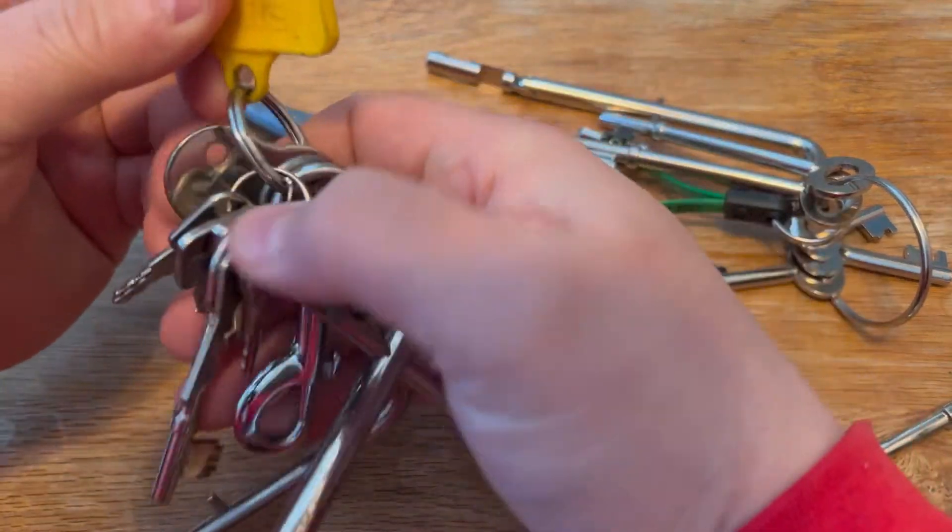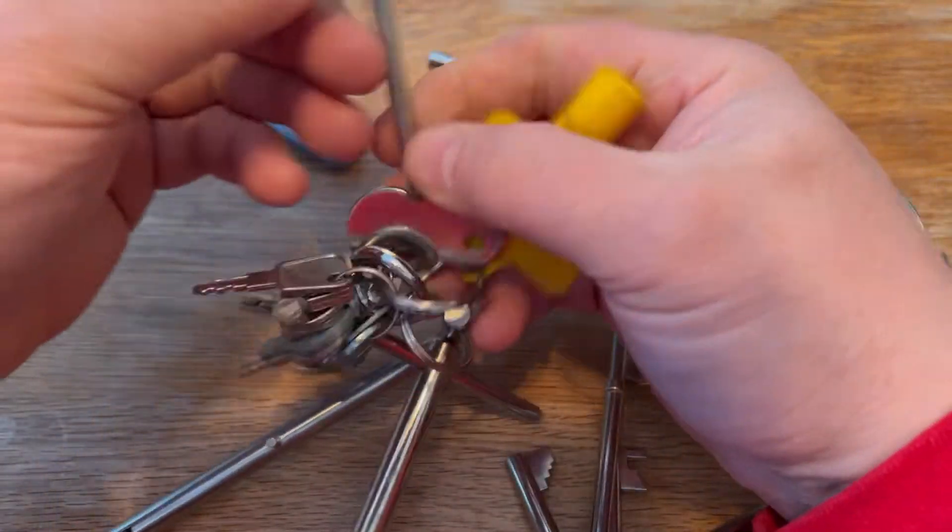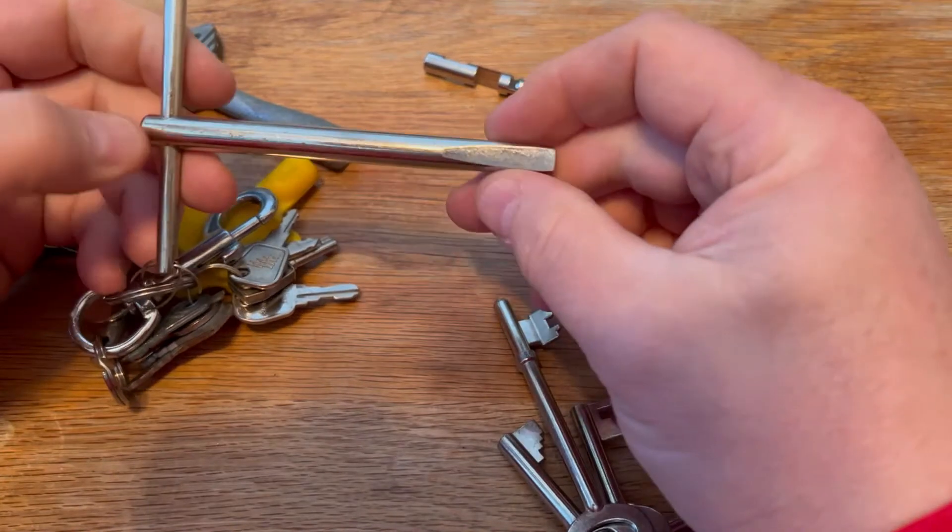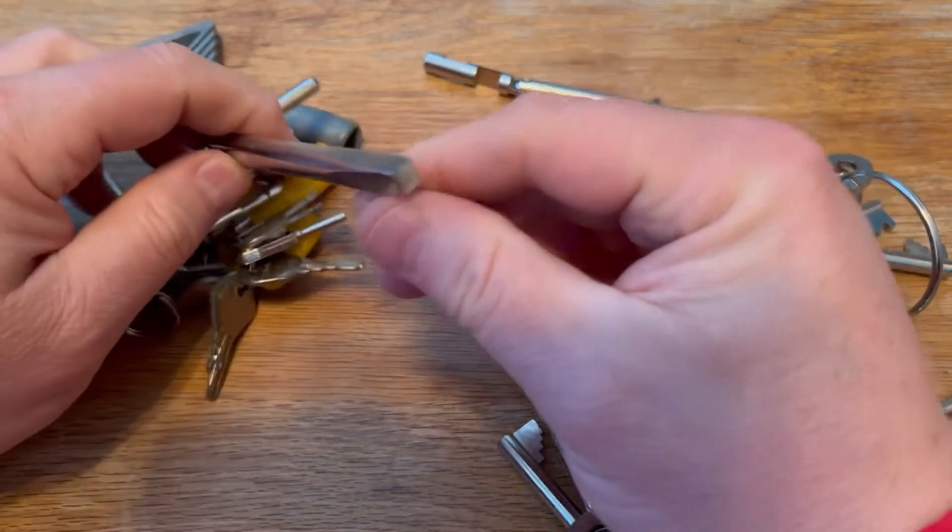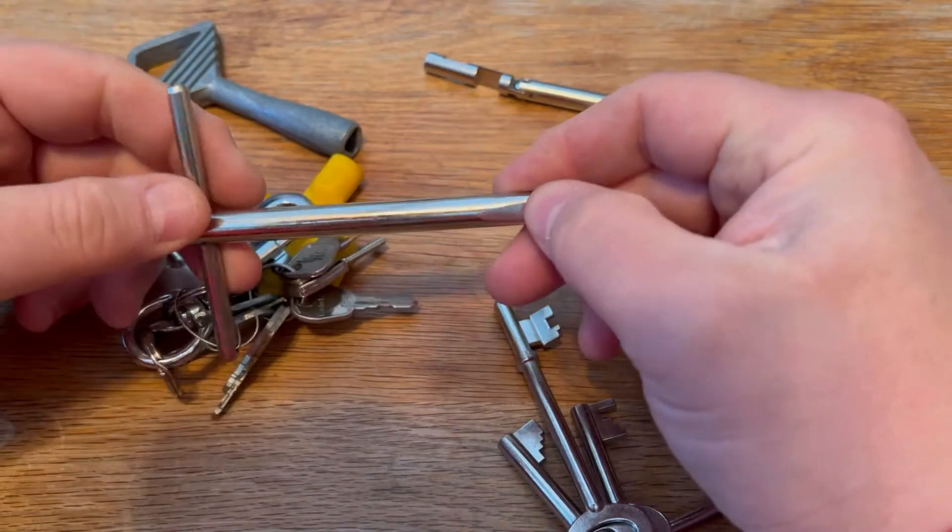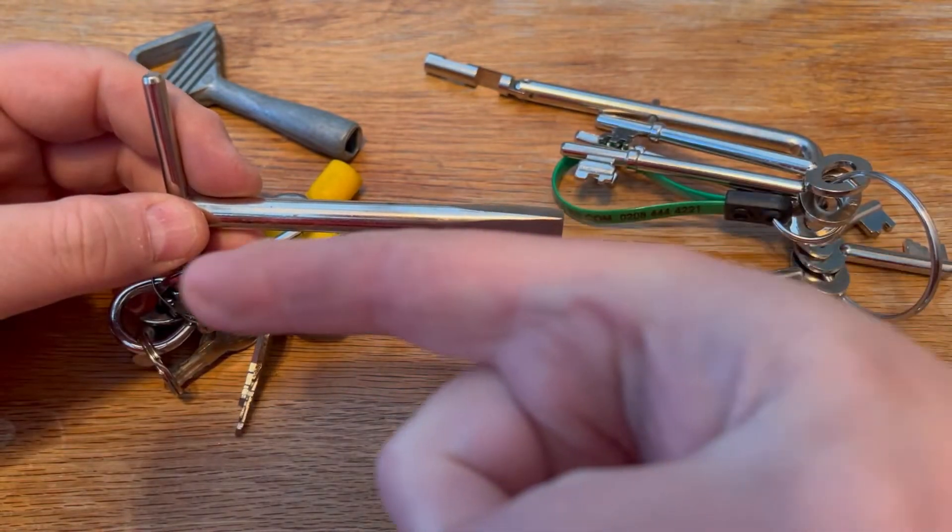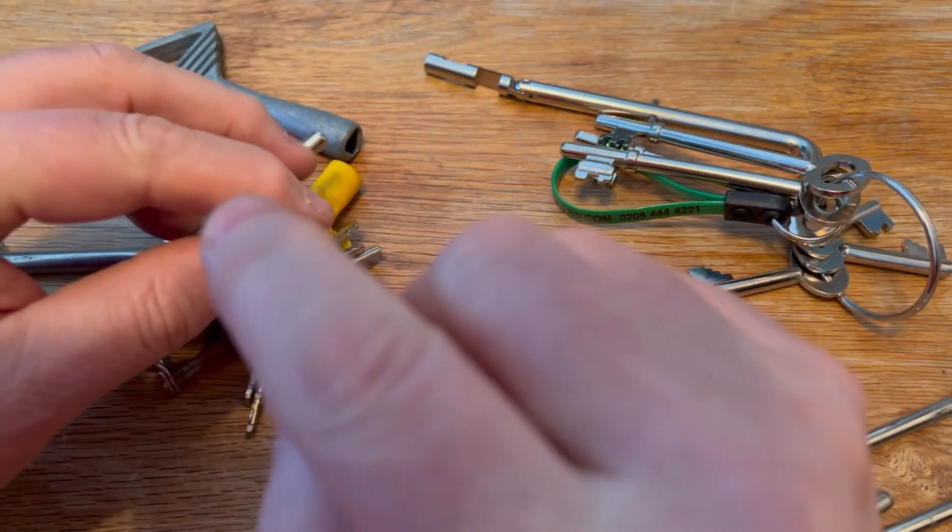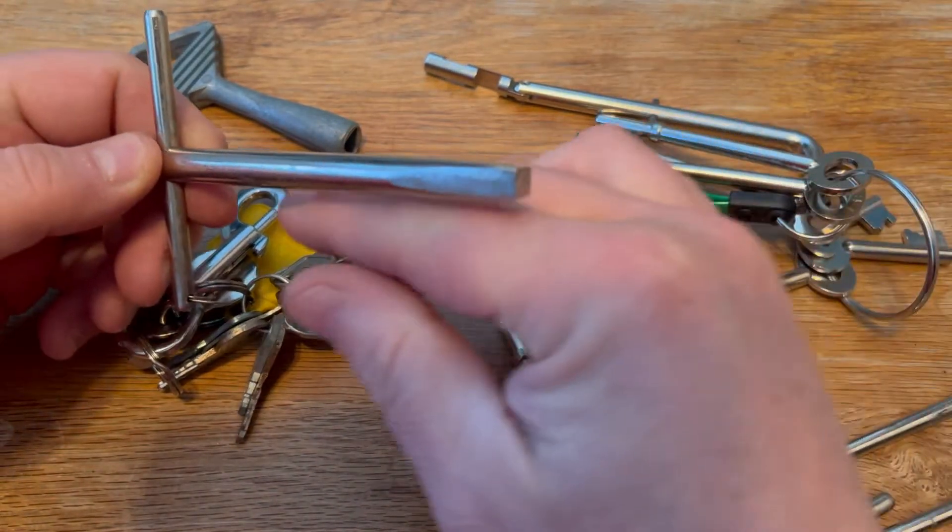This is a mortise key. So for example, when you fit a lock to a door before you've got that, you fit the handles, you have to put your square bar through and you put the handle both sides. This opens up those locks if you haven't got a handle on them.